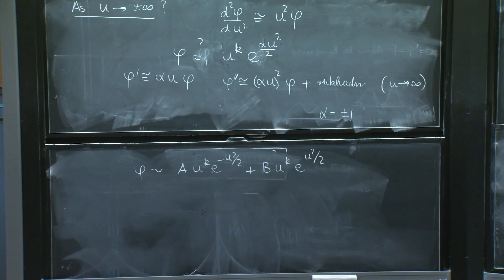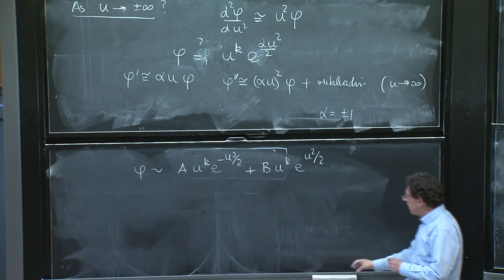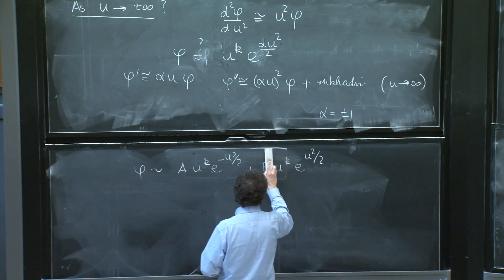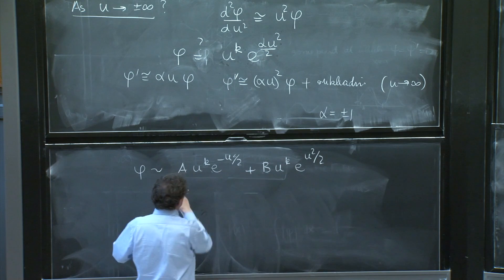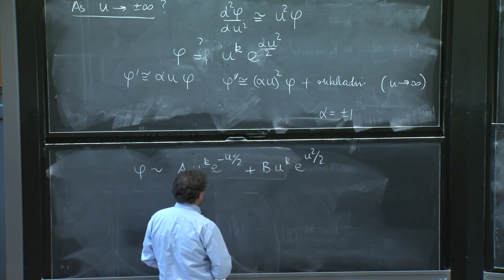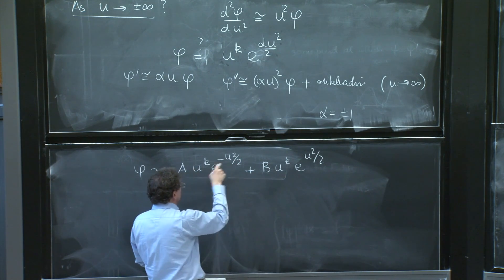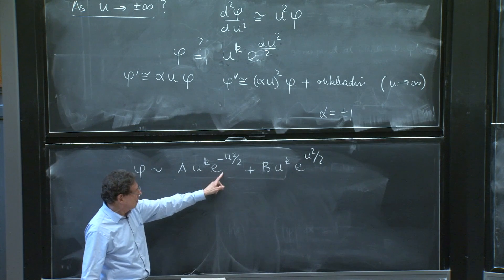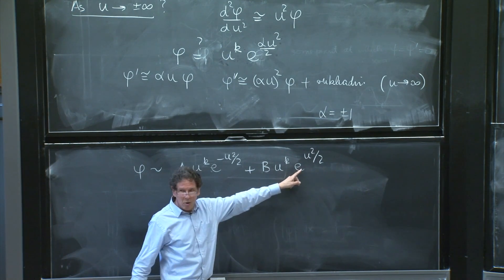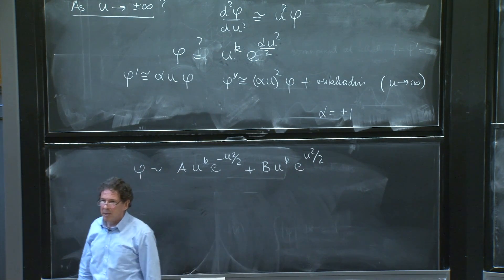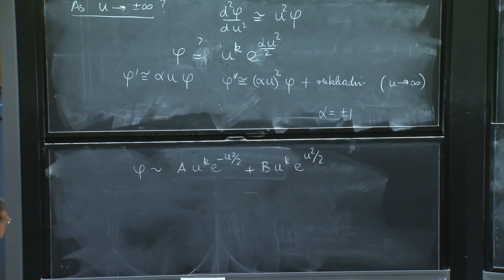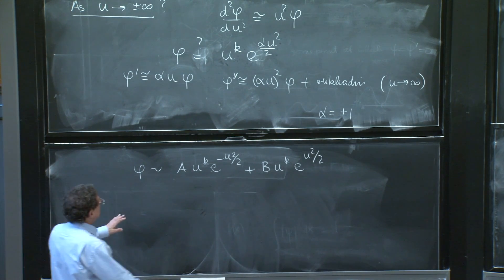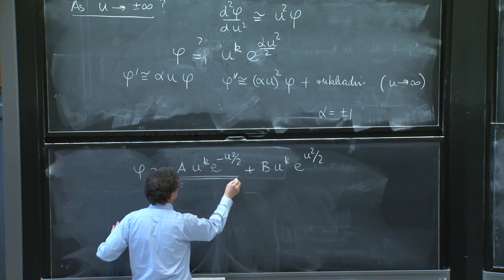So you would expect things like this to be solutions. And here you see the beginning of the danger. Well, a minus u squared over 2 times a power sounds pretty good. But a u squared over 2 times a power sounds pretty bad. So maybe this is what we want to happen.